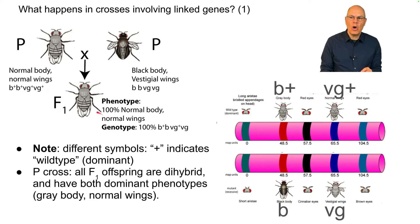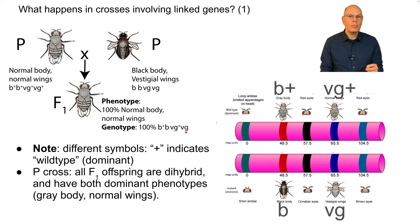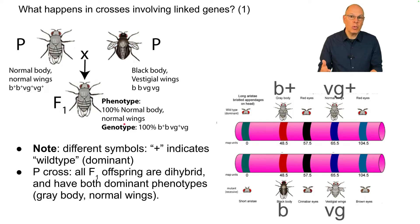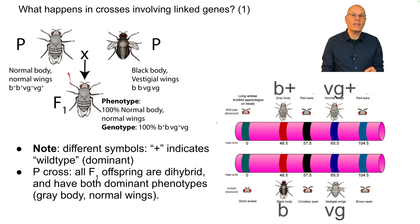Note that all the F1 offspring are dihybrid: B+, B, VG+, VG. They have both dominant phenotypes. This is what you'd expect in a Mendelian trait for the F1s — a gray body and normal-winged fly, which has all of the dominant characteristics.